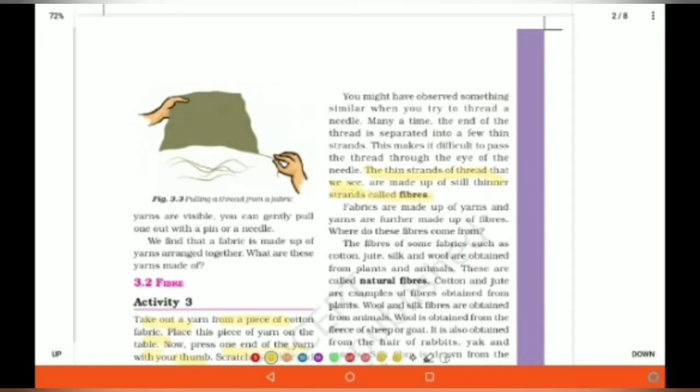Thin strands of threads we see are called the fibers. When we get together many fibers, it becomes yarn and when we get many yarns together, it becomes fabric. We have two types of fibers.